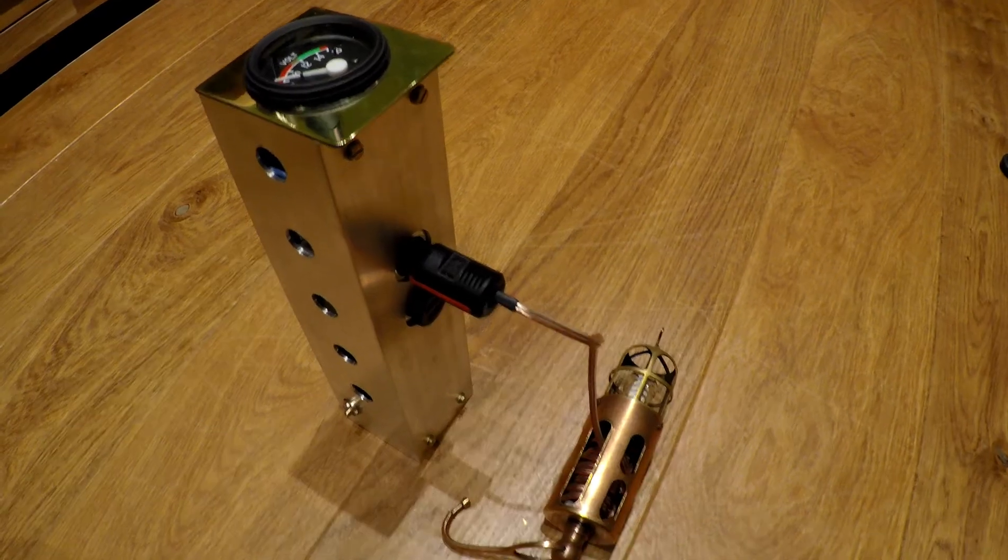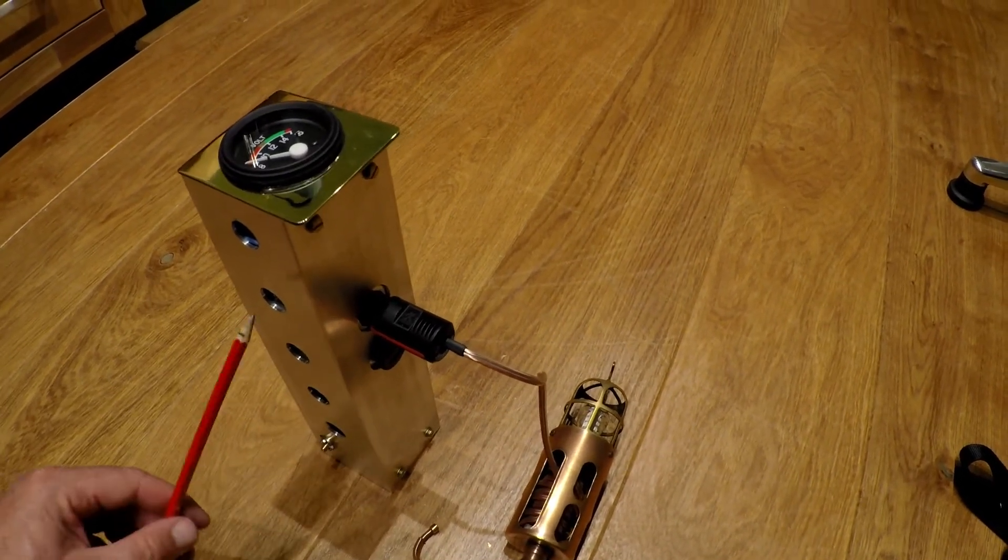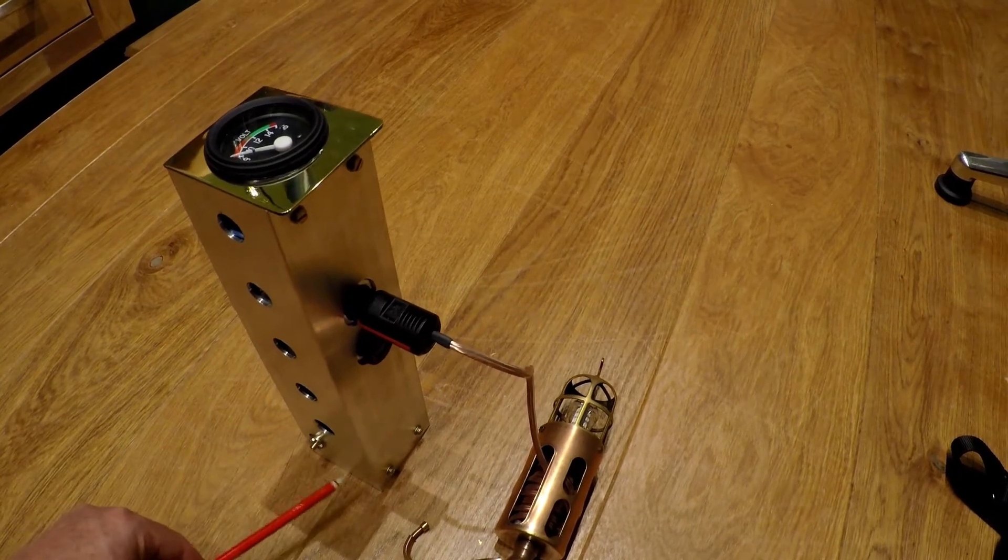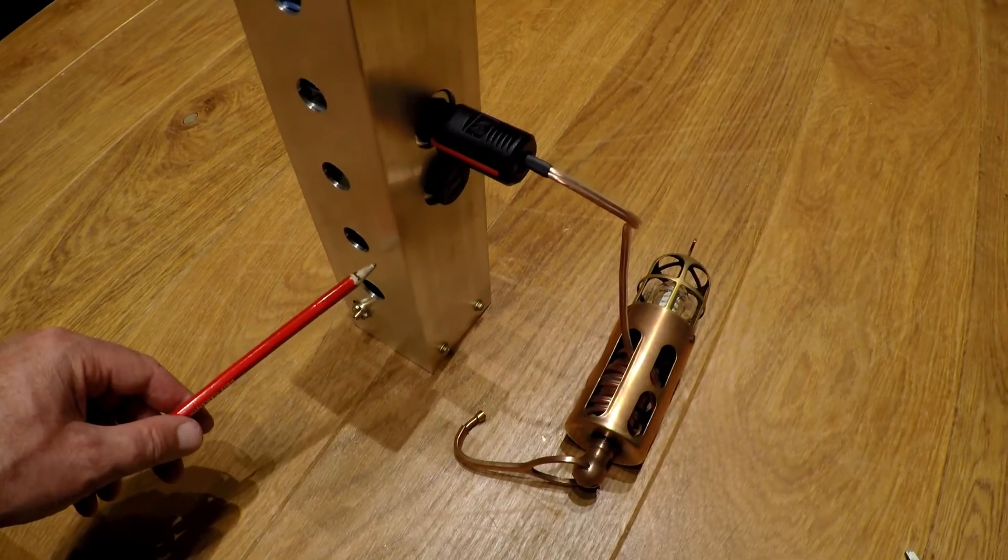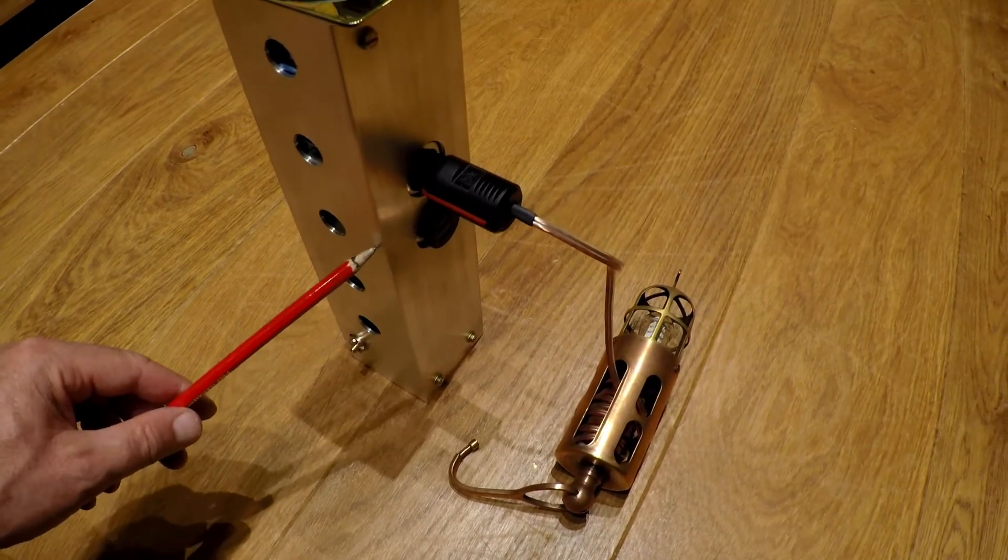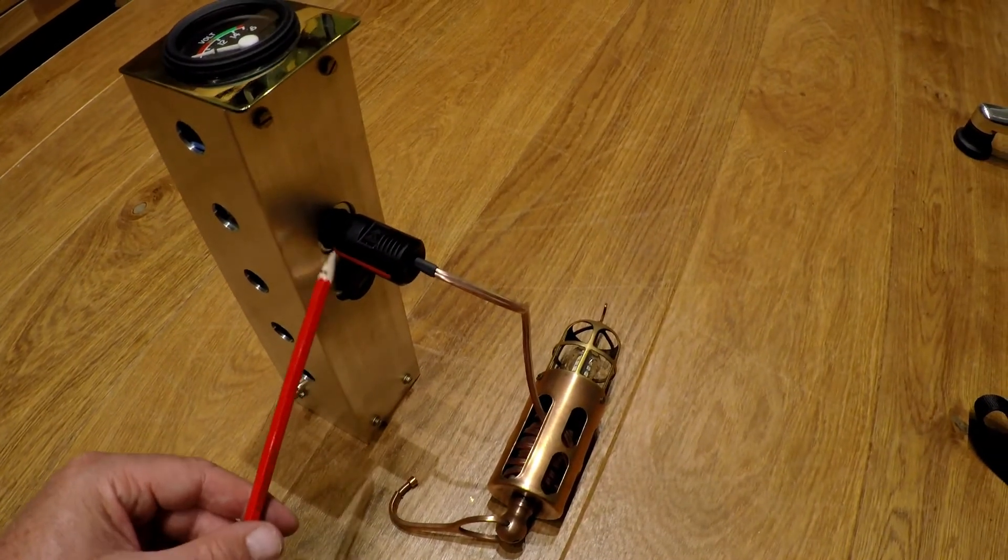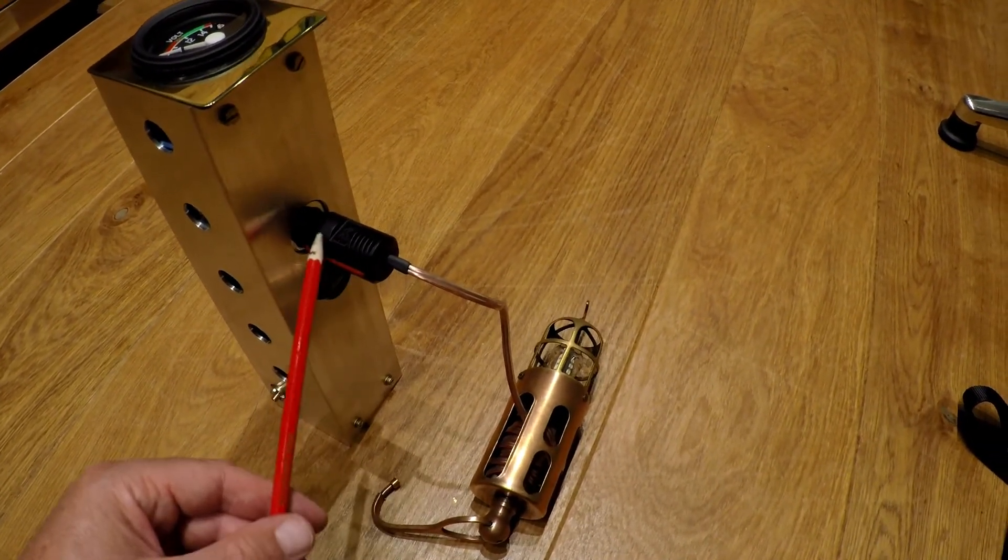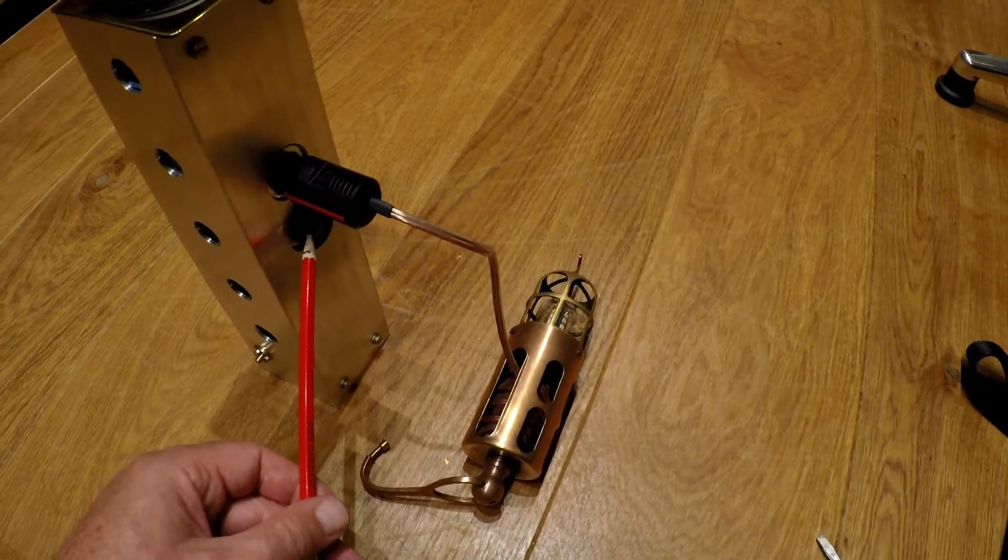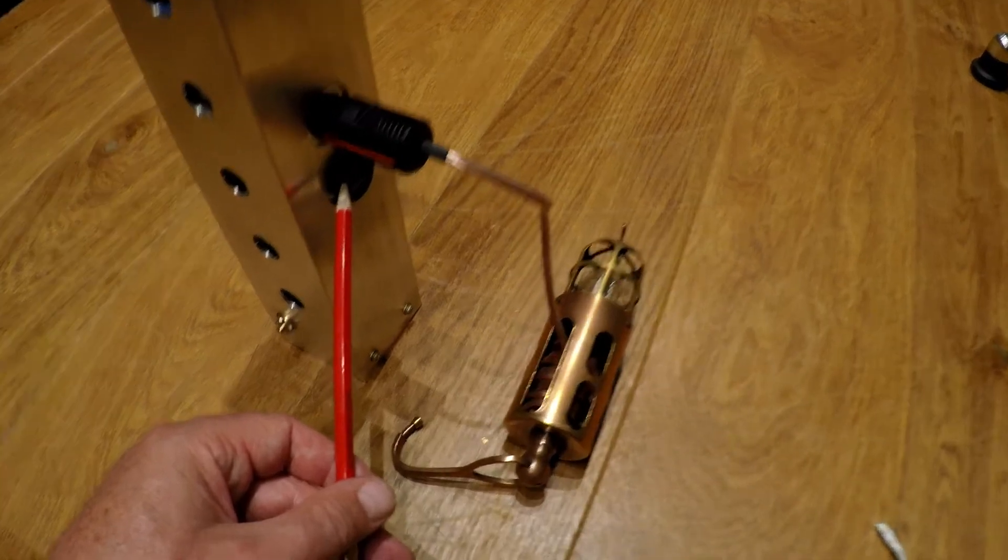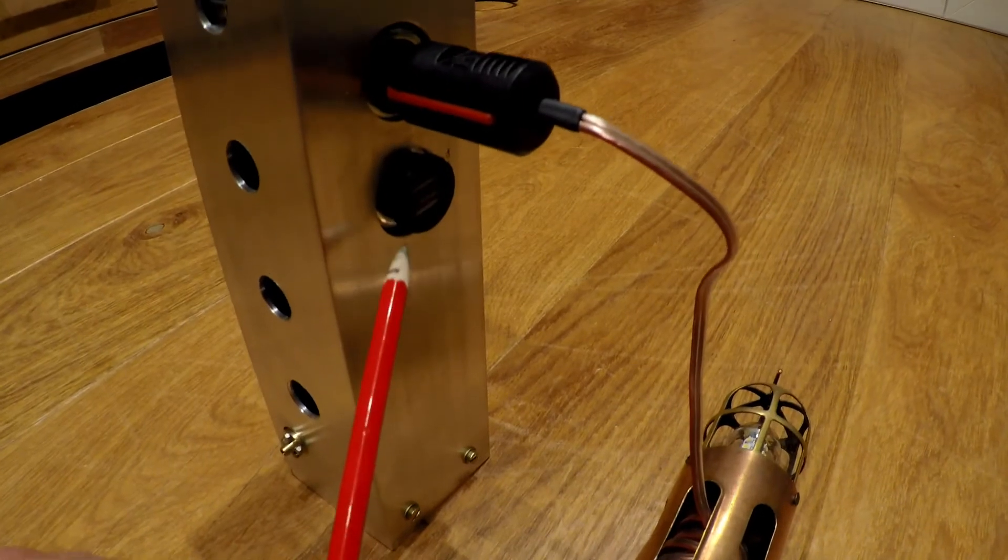So I just assembled now the whole unit and it contains here in the lower part the steam turbine. In this middle section you have these two sockets. One is connecting here the lamp and the other socket there I have USB charging device.